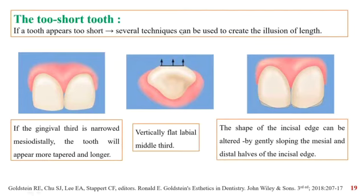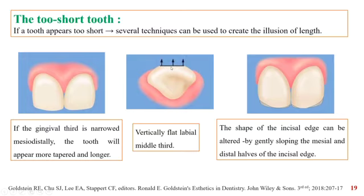In cases when the teeth are too short, several techniques can be used to create the illusion of length. Firstly, the gingival third should be narrowed mesiodistally so that even if the tooth is short, it appears tapered and elongated. This effect can be further enhanced by making the middle third of the labial surface more flat, giving an illusion of increased length due to an increased vertical reflecting surface. Also, the shape of the incisal edge can be altered by gently sloping the mesioincisal and distoincisal line angles, and vertical lines on the tooth can give an illusion of increased length.